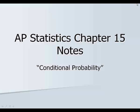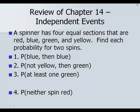Chapter 15 is on conditional probabilities. First we're going to review a little bit from chapter 14. We're going to start with an example where we have a spinner that has four equal sections. The sections are red, blue, green, and yellow. We want to find each probability given two spins. Go through each one of these and see if you can do them without my help. Pause until you're ready to go through the answers.